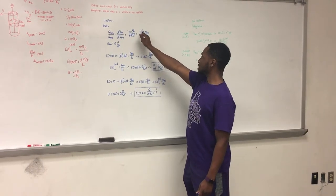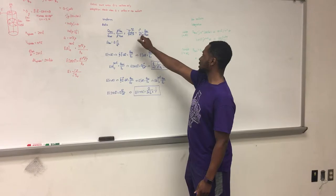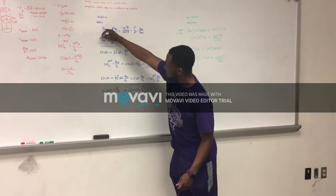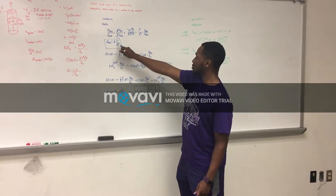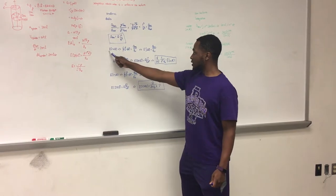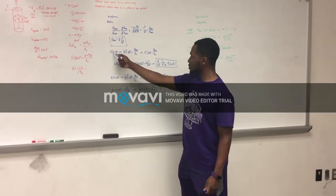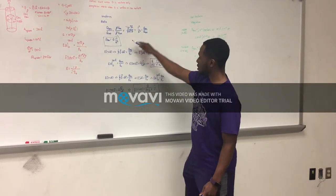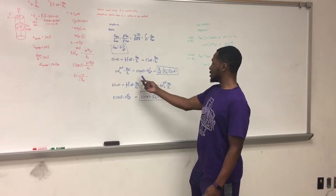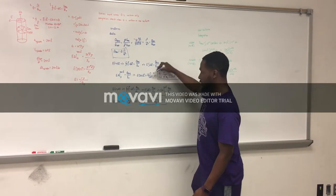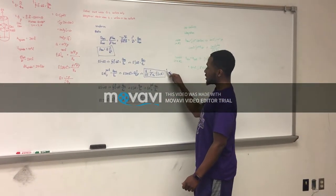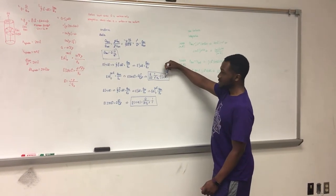We're left simply with our enclosed radius squared over our total radius squared, which is still equal to our enclosed charge over our total charge. We can simplify that to get: our q enclosed equals our total charge multiplied by our desired radius squared over our total radius squared. For the electric field when the radius is smaller than our total radius, we use the flux equation set equal to our enclosed charge over epsilon naught, integrate dA, and plug in our q times r squared over total R squared.